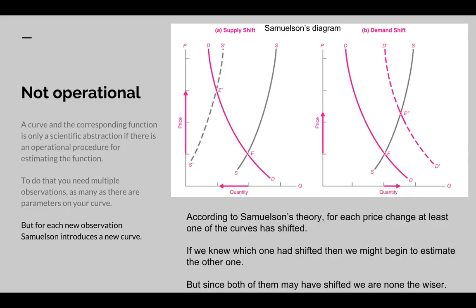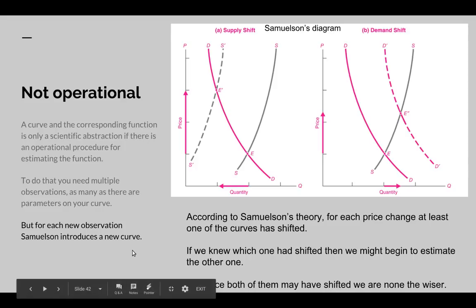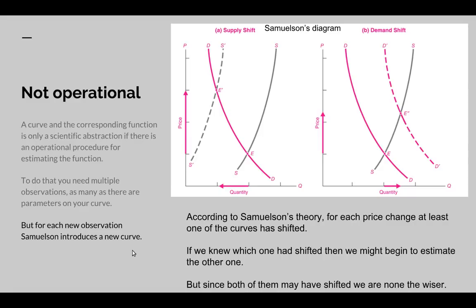Now if we knew that one of the curves had shifted, we knew which one of the curves had shifted, with enough observations you might be able to get an estimate of the other one. But you don't know which one's shifted. Since both of them might have shifted, we're none the wiser. The worst case is they both shifted and you've got eight new free parameters, and one new observation.